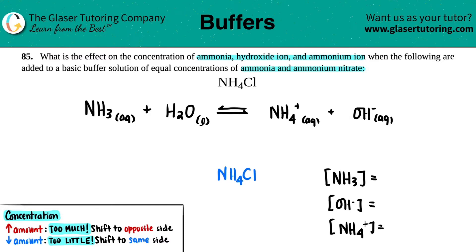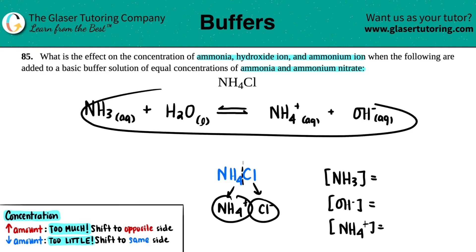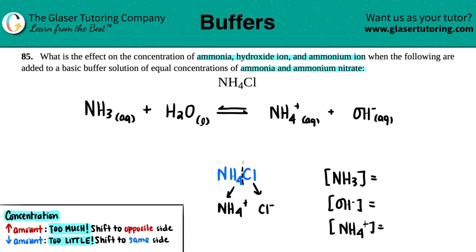NH4Cl is a salt. If we split this up, ammonium is NH4+ and Cl would just be Cl-. Hopefully one of these will show up in our balanced equation, and in this case we do see that we have NH4+ in common. So we're just going to focus on that.